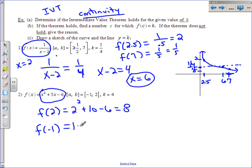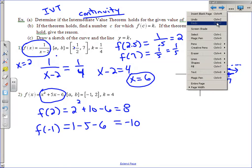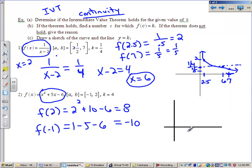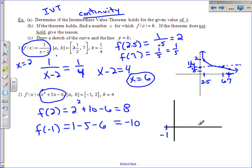f of negative 1 would be 1 minus 5 minus 6, which is negative 4, negative 10. Does that look right? Okay, so is 4 in between these two values? Of course it is. I didn't have my line here, so we're going to come back here and draw our lines. And I also like that. Okay, so we've got negative 1 and we also have 2.